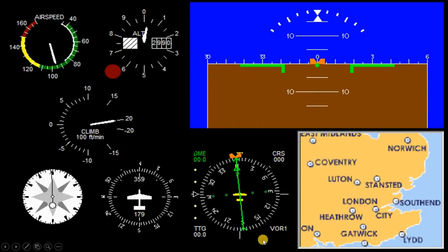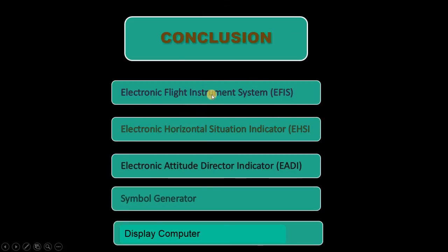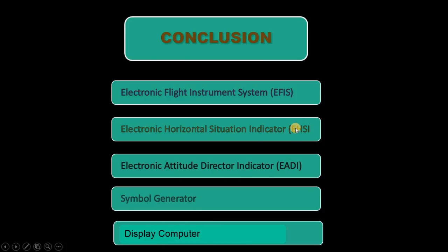To conclude today's lesson: we discussed the Electronic Flight Instrument System, including the EHSI and EADI, which are the main parts. The EHSI and EADI receive information from symbol generators, which provide symbols related to the aircraft systems, displayed as EADI or EHSI. Thank you very much — I hope you have gained good information related to the Electronic Flight Instrument System.